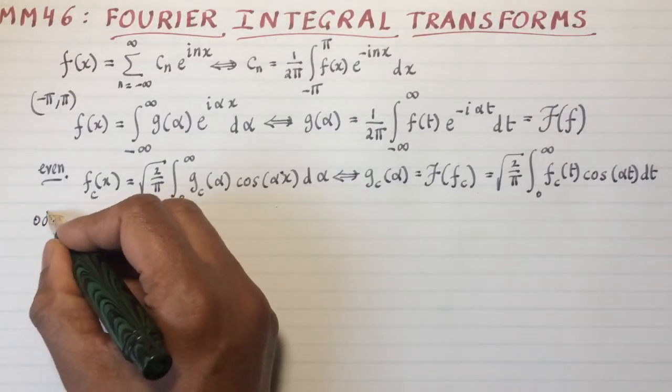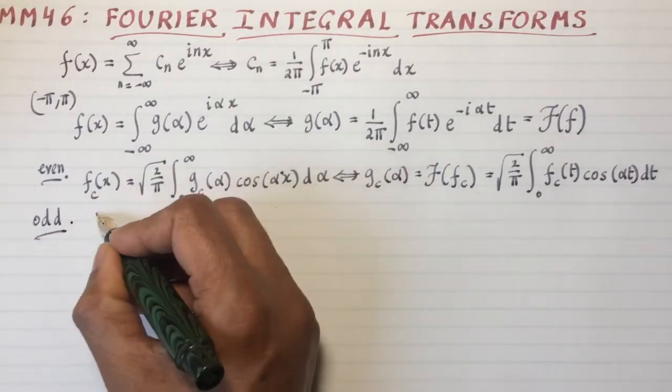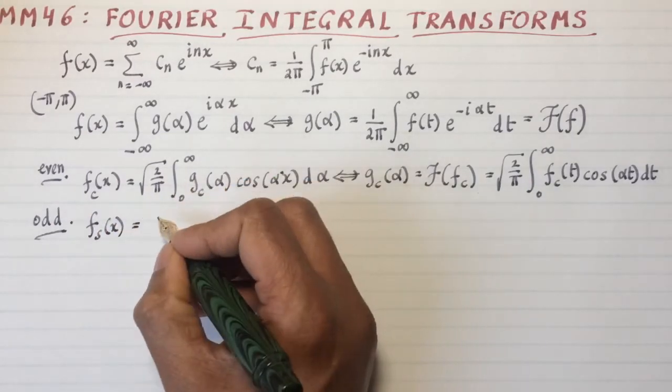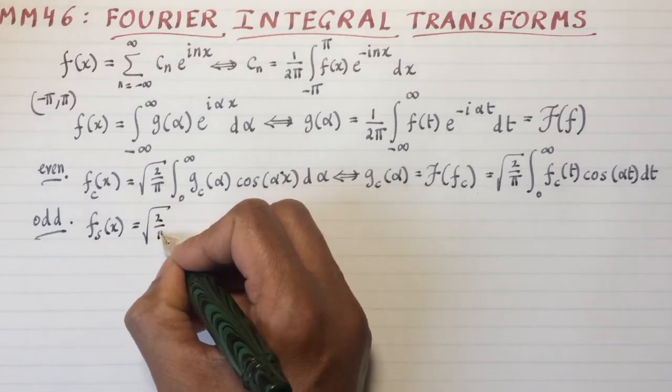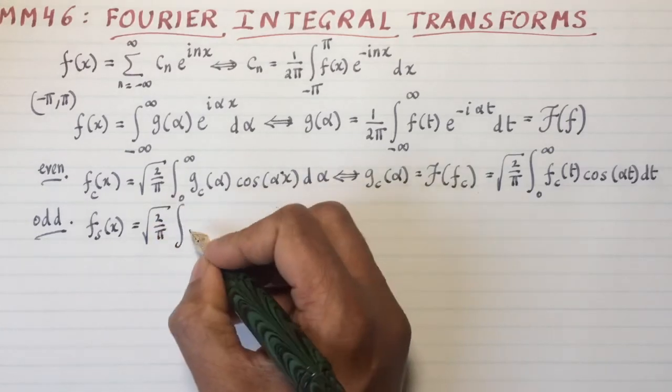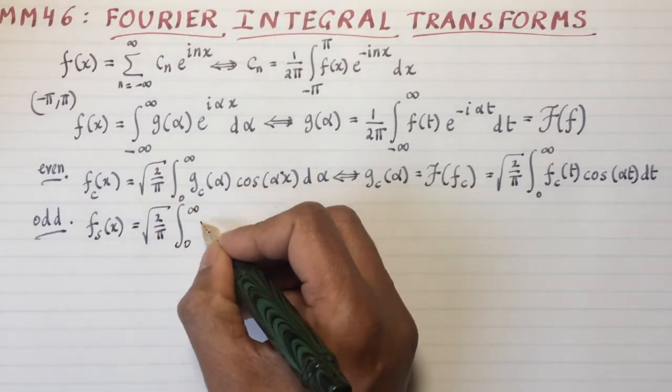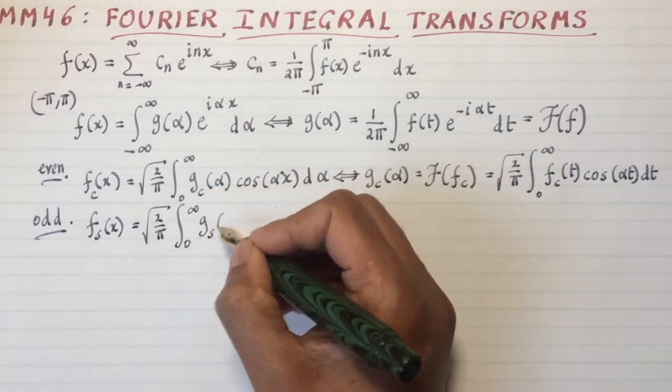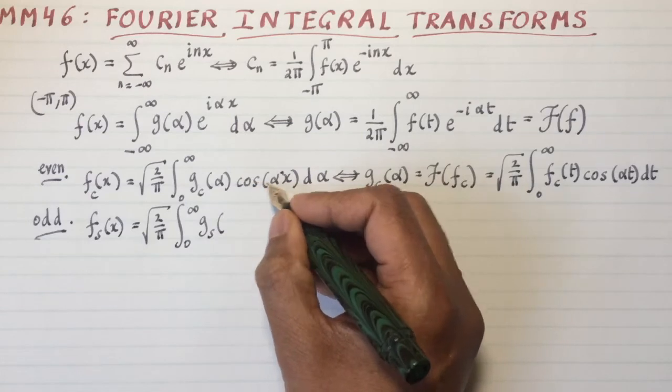For the odd function, you get the so-called Fourier sine transform, fsx, and that's going to be the square root of 2 over pi, which is integral from 0 to infinity. Basically, all I'm doing is replacing the cosine symbol with the sine symbol and the cosine with the sine.